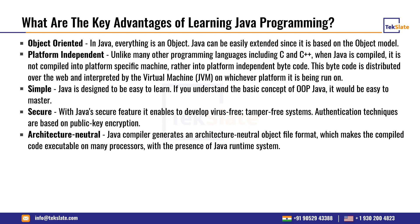Java is platform independent. Unlike many other programming languages including C and C++, when Java is compiled it is not compiled into platform-specific machine code, but rather into platform independent bytecode. The bytecode is distributed over the web and interpreted by a virtual machine on whichever platform it is being run on.